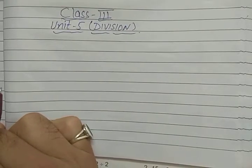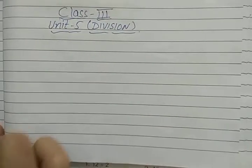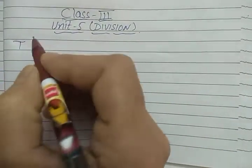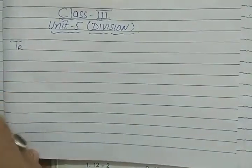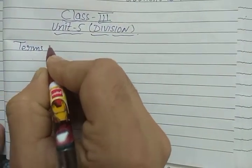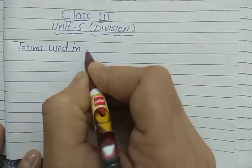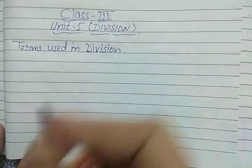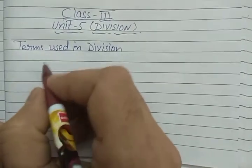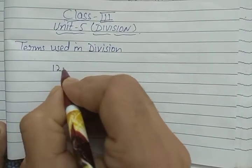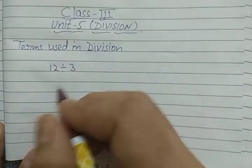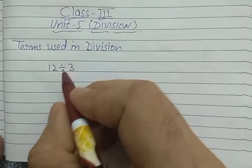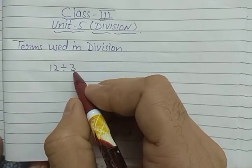Hello students, today we will learn the terms used in division. There are three terms used in division. Let us take one example: 12 divided by 3. You know how to divide 12 by 3 by using the multiplication table — we have to recite the table of 3 till 12.